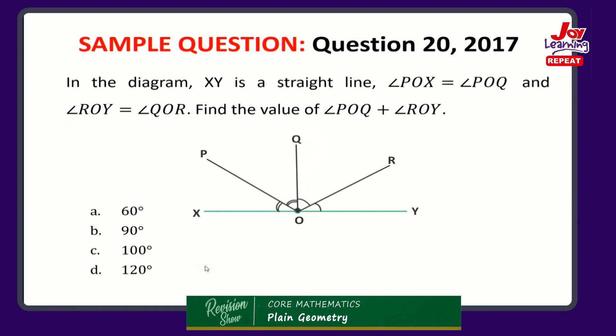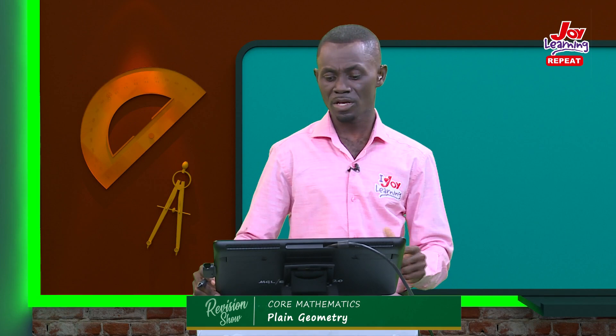Now let's solve a problem. This is a question from the 2017 West African Secondary School Certificate Exams, question 20 — a multiple choice question. The question says: in the diagram, XY is a straight line. Angle POX equals angle POQ, and angle ROY equals angle QOR. Find the value of angle POQ plus angle ROY. The options are: A, 60 degrees; B, 90 degrees; C, 100 degrees; and D, 120 degrees.